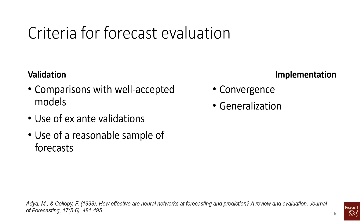The next point is generalization, which relates to the accuracy of the forecast model on the out-of-sample period. If a model performs very well in the training sample — say a forecast error of five percent — but when you look at the test sample you suddenly see an error of 20 percent, that is really problematic. Another way to check generalization is to compare the same model with different datasets. For example, if you're working with cryptocurrency, check the same forecast model for Bitcoin, Ethereum, and Ripple data to see if it performs similarly across all of them.